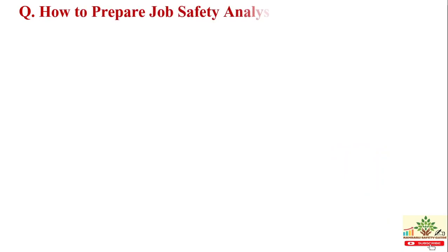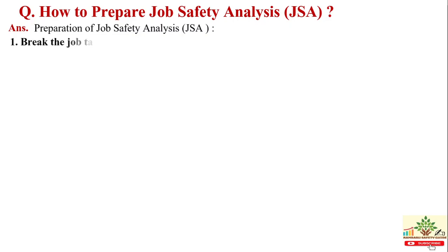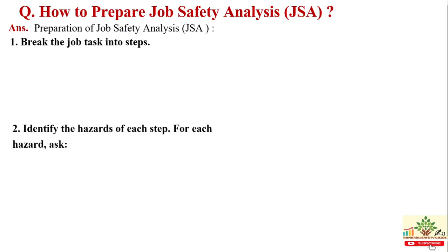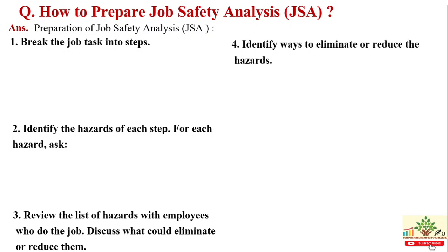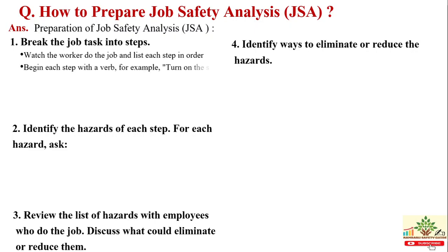How to prepare a job safety analysis: Step 1 — Break the job task into steps. Step 2 — Identify the hazards of each step. Step 3 — Review the list of hazards and discuss what could eliminate or reduce them. Step 4 — Identify ways to eliminate or reduce the hazard. Step 5 — Watch the worker do the job and list each step in order. Step 6 — Set the site to see what work should be done. Step 7 — Begin each step with a verb, for example 'Turn on the soap.' Step 8 — Do not make it overly detailed. You may also want to photograph or videotape the process.